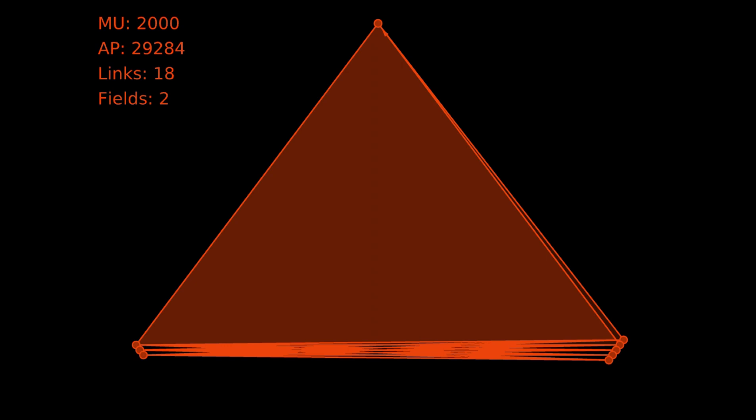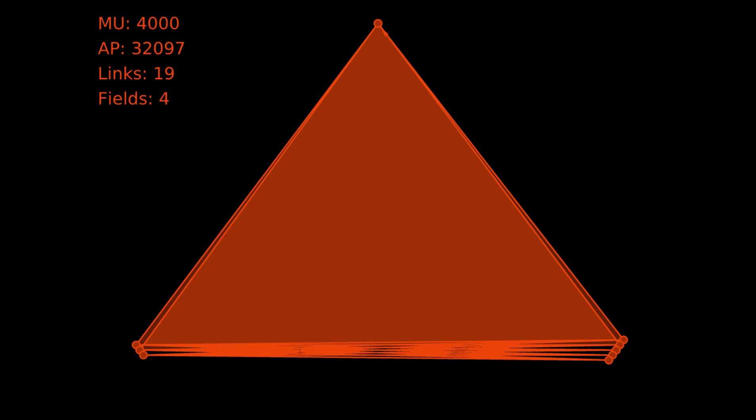Then they throw another link to the right and make another field because they've now just closed another triangle. But now that they've linked to two portals on the right, if they throw to the left again, it closes two triangles and makes two fields. There! So their fields have gone up from two to four. Now the same thing applies. If they link to the right again, it will close two fields because they've linked to two portals on the left. Their fields will go up from four to six.